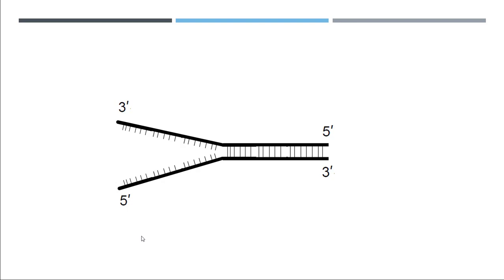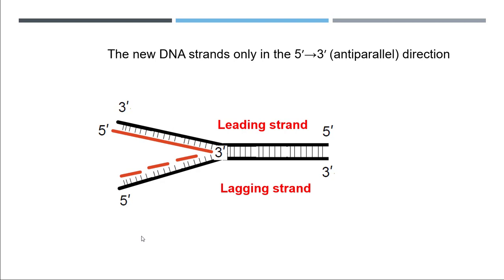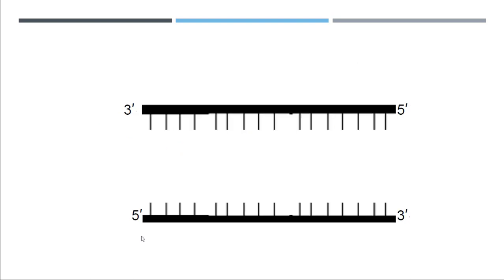The DNA is opened up and has 3-prime and 5-prime ends. The new DNA can only be formed in the direction of 5-prime to 3-prime end. For the strand above, there is no problem attaching a new strand from 5-prime to 3-prime. But for the strand below, which already runs 5-prime to 3-prime, small tiny fragments are generated. The upper strand is called the leading strand and the lower strand is called the lagging strand, and the small fragments generated on the lagging strand are called Okazaki fragments.